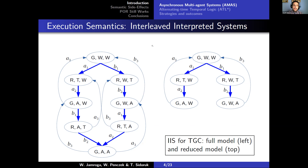A major problem is, of course, state explosion, particularly so in an asynchronous setting. So we employ partial order reduction to generate on the fly from the AMS a reduced model. As you can see, even in such a small scale example, the reduction can be quite significant. We'll return to reductions at some point of the presentation.